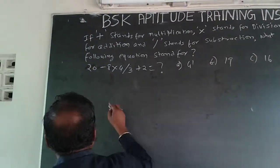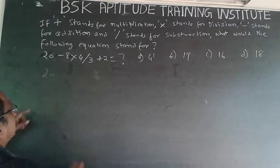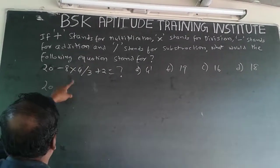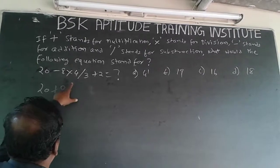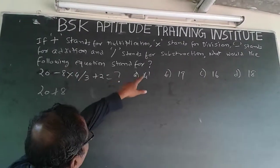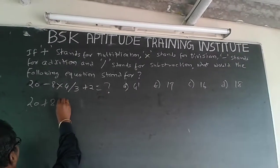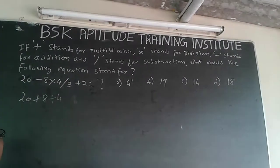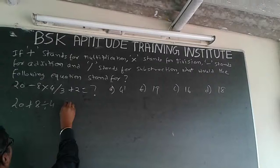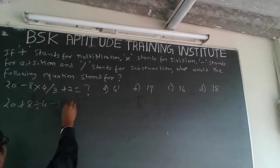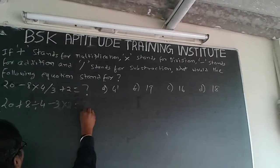So it will be 20, what is happening to minus? See, minus stands for addition, so plus 8, and then into stands for division, divided by 4, and division stands for subtraction, minus 3, and plus stands for multiplication, into 2. Actually, this is the question.